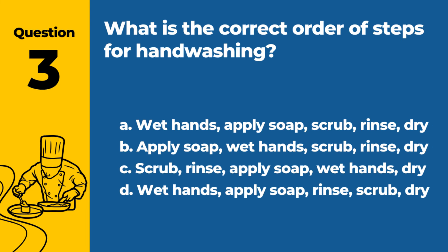Question 3. What is the correct order of steps for hand washing? a. Wet hands, apply soap, scrub, rinse, dry. b. Apply soap, wet hands, scrub, rinse, dry. c. Scrub, rinse, apply soap, wet hands, dry. d. Wet hands, apply soap, rinse, scrub, dry. Answer: a. Wet hands, apply soap, scrub, rinse, dry. This is the correct and most effective order for hand washing to eliminate germs.